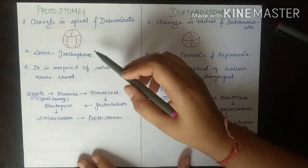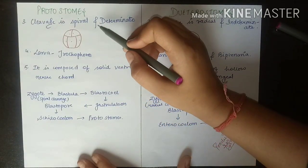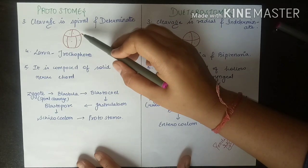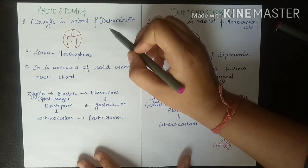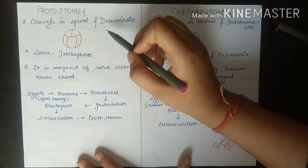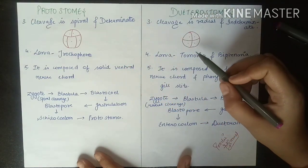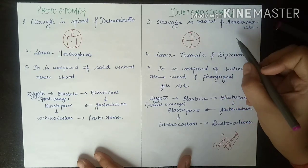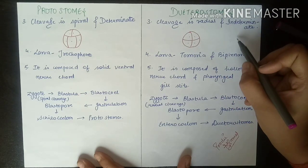In protostomes, cleavage is spiral and determinate. In deuterostomes, cleavage is radial and indeterminate.